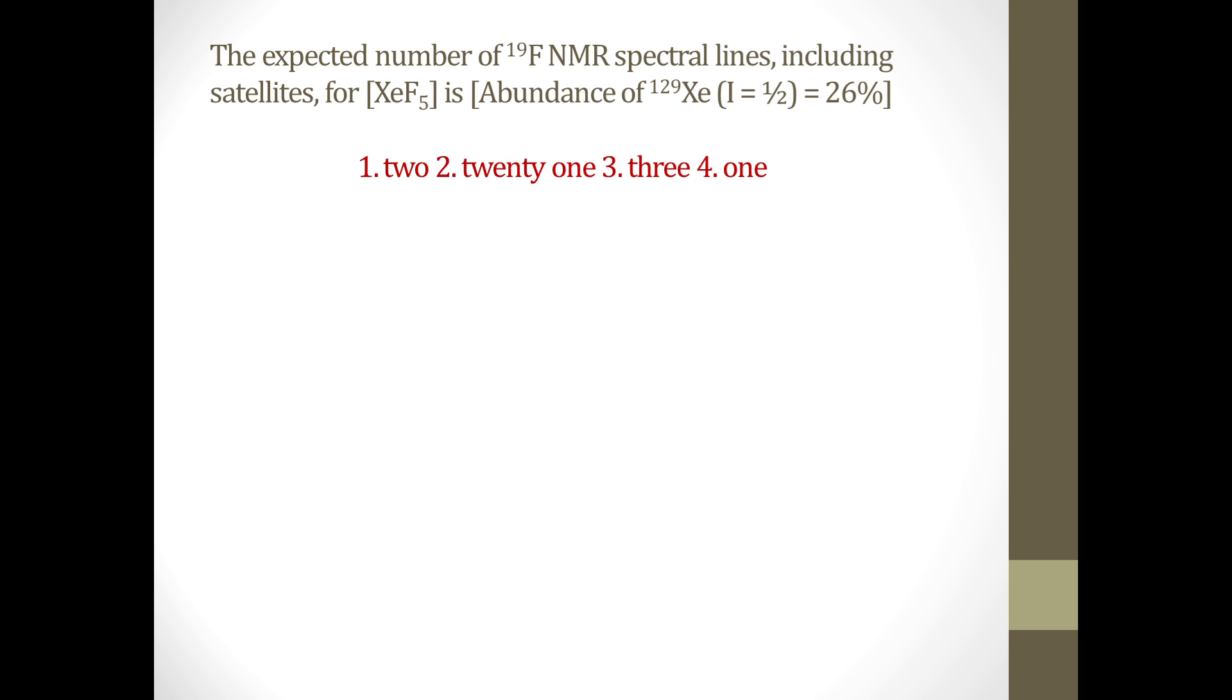Alright, so this question came for two marks in the December 2016 paper. In this question it is stated that the expected number of NMR spectral lines in 19F NMR including satellites for XeF5 is... Now this concept I had missed out in my lectures and this is about satellite peaks.